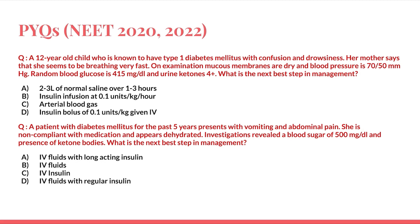The options are: A) 2 to 3 liters of normal saline over 1 to 3 hours; B) insulin infusion at 0.1 unit per kg per hour; C) arterial blood gas; D) insulin bolus of 0.1 unit per kg given IV.